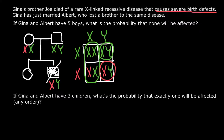Now we have to find the probability for Albert and Gina to have affected or unaffected progeny. Albert must be phenotypically and genotypically normal because he is an adult, and this X-linked recessive genetic disorder causes severe birth defects. So he is obligately genotypically and phenotypically normal. This couple may have affected progeny only if Gina is a carrier just like her mother, and we found that Gina's probability of being a carrier is one half.